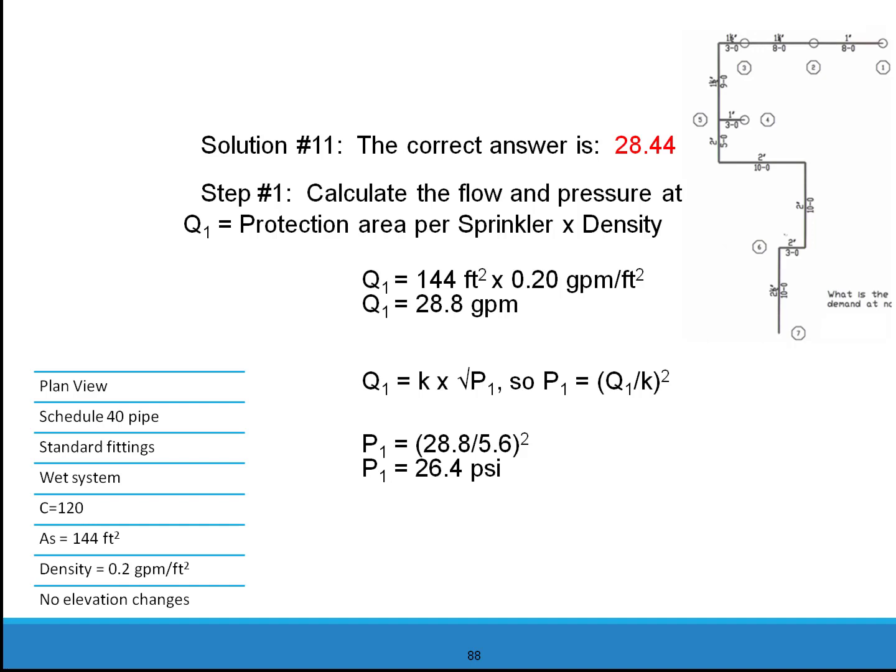Step 1, calculate the flow and pressure at Q1 or most remote sprinkler. Protection area per sprinkler times density. Q1 is equal to 144 square feet times 0.2 GPMs. Q1 is equal to 28.8 GPMs. Q1 is equal to K times the square root of P.